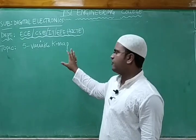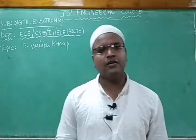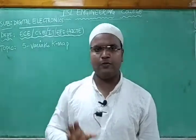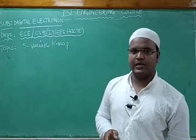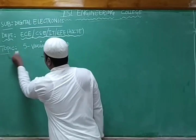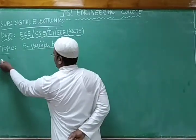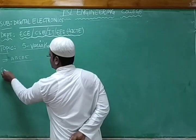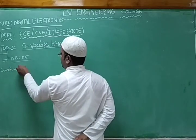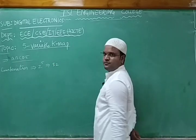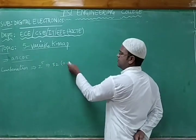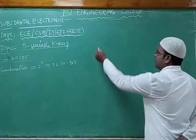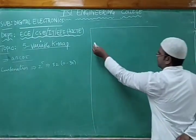In the five-variable KMAP, the first thing we should understand is how to write the square boxes for each KMAP. With five variables — A, B, C, D, and E — the number of combinations is 2 to the power 5, which is 32. The bits range from 0 to 31, and we need to write the truth table for all these combinations.